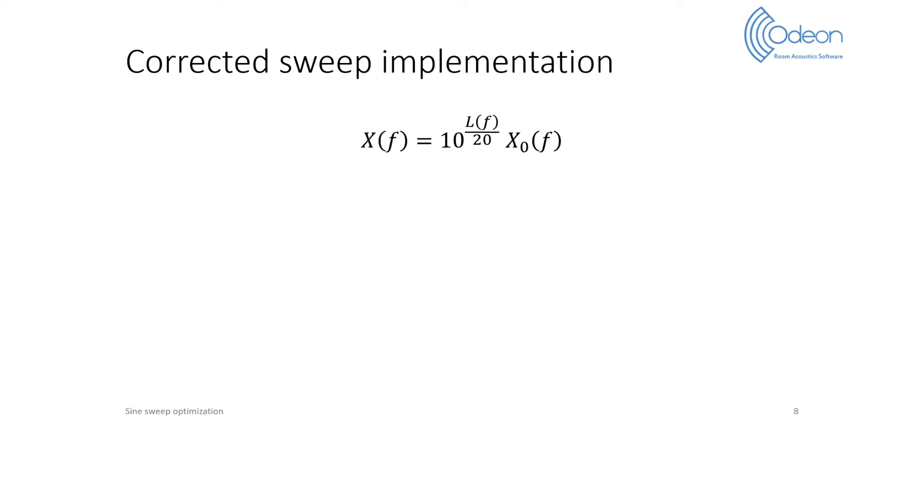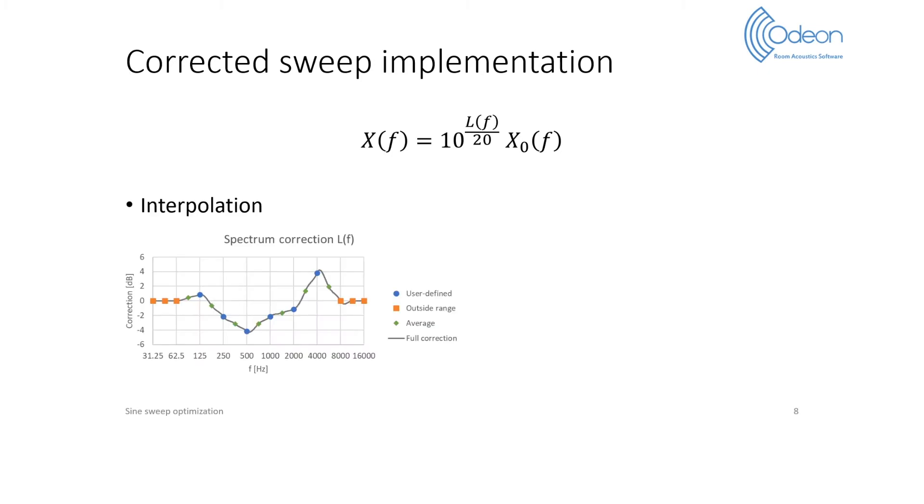Once the power corrections are properly defined, we calculate the magnitude spectrum of the corrected sweep. This is done by defining a correction function LF, which is a continuous function of frequency in decibels. LF is calculated by interpolation. You can read more about the interpolation procedure in the paper,